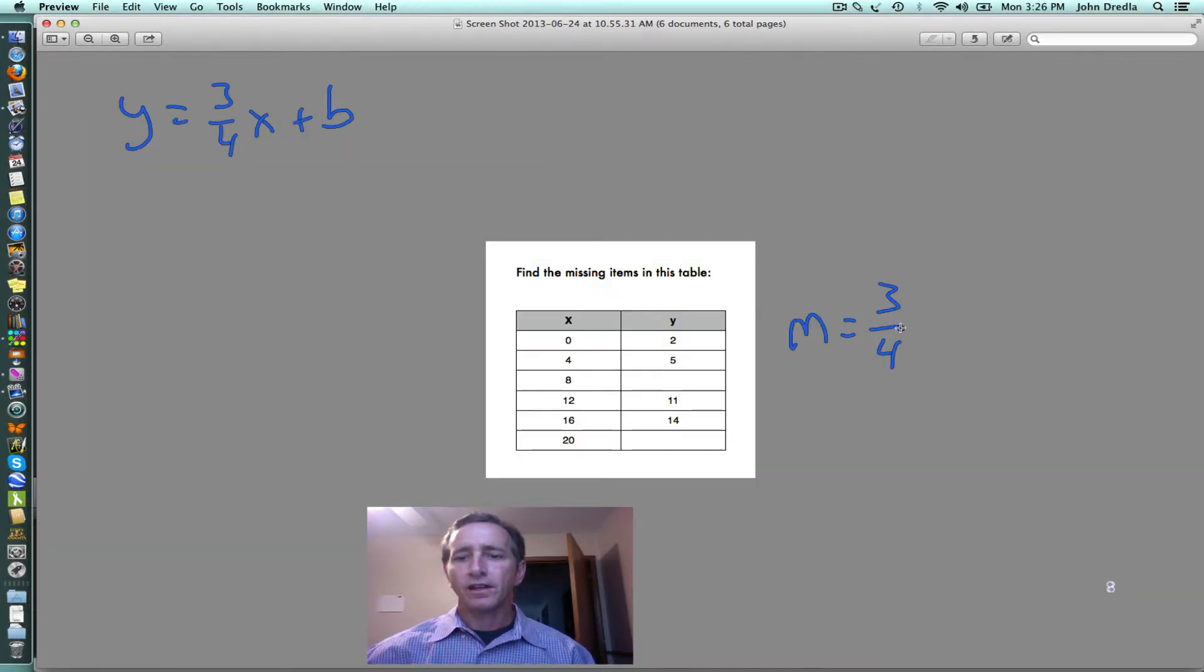The slope of our line is 3 over 4. I can use any one of these ordered pairs to plug back into our equation and solve for b. I plug the y into the y value and the x into the x value.